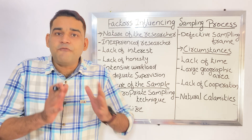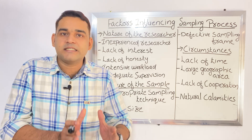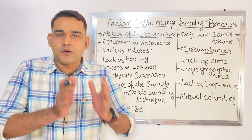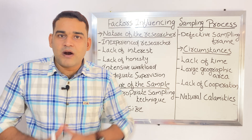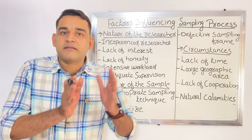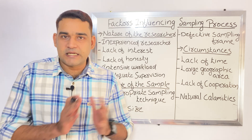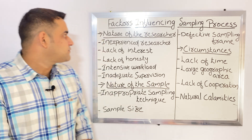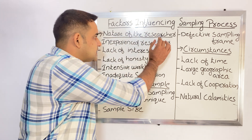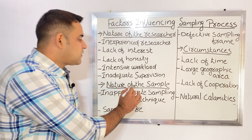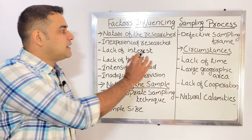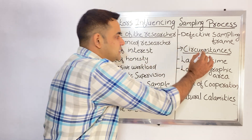Some factors are influencing this entire sampling process. What are they? We can see one by one. Mainly three factors are there: first one is nature of the researcher, second one is nature of the sample, and the last one is circumstances.